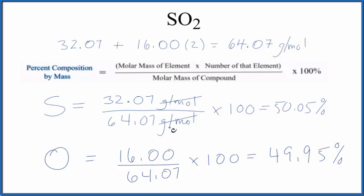So these numbers should add up to 100 percent or very close, and that's how you find the percent composition by mass for each element in SO2, sulfur dioxide.